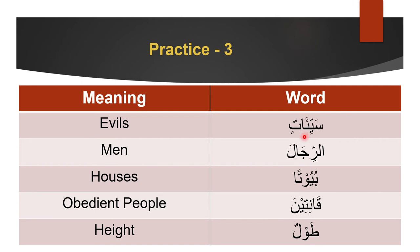Sayyiāt: it has a feminine plural ending. We look at the meaning to see if it's human or non-human — 'evils,' which is non-human. A non-human feminine plural is treated as singular feminine.